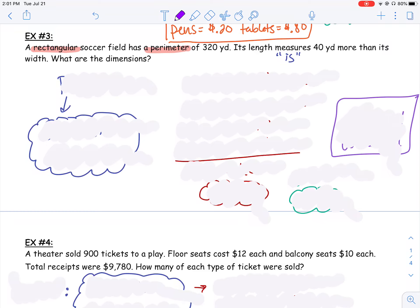All right, let's look at another example of a word problem using system of equations. It says here in example number three, a rectangular soccer field has a perimeter of 320 yards. Its length measures 40 yards more than its width. What are the dimensions?